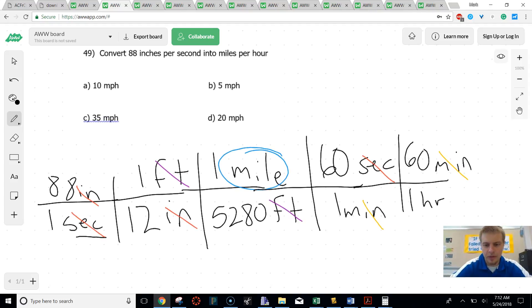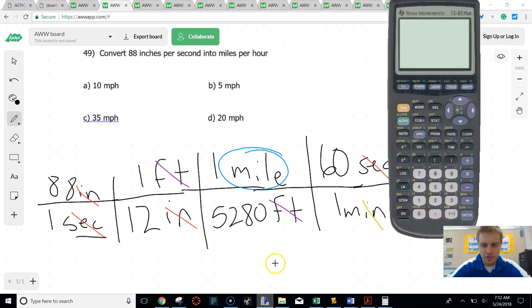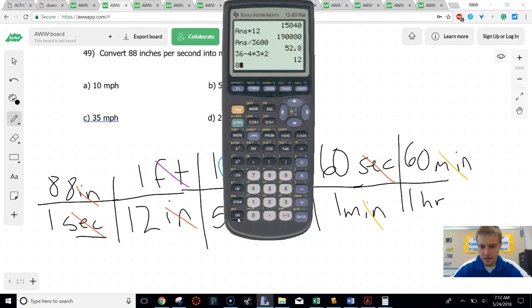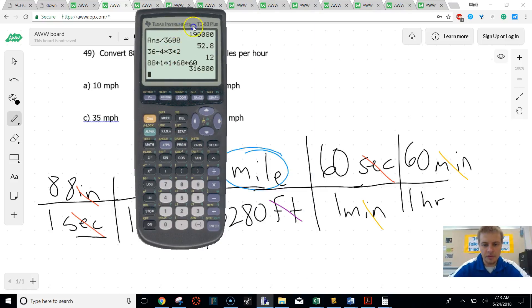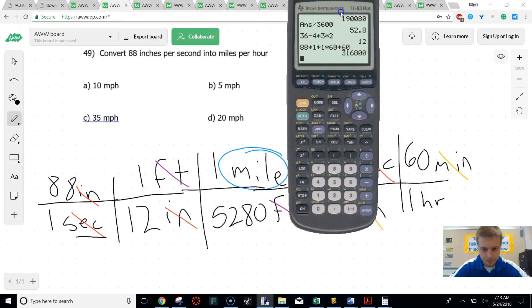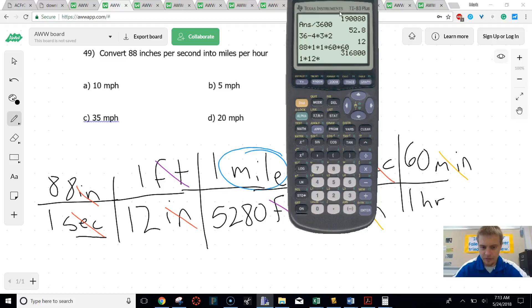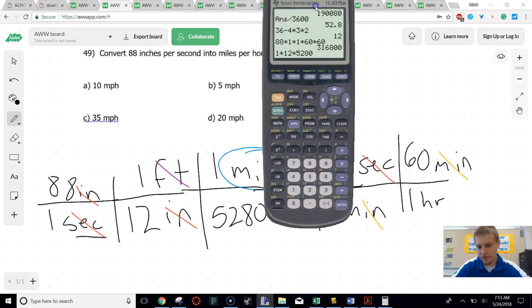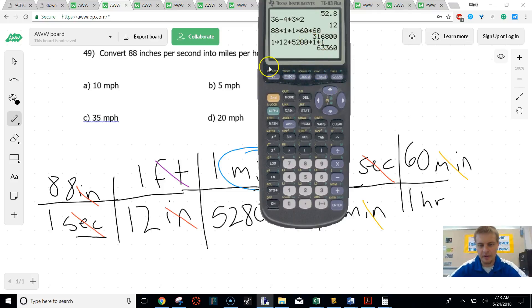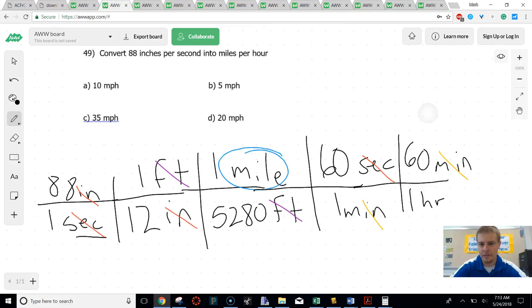And then we just go through and we multiply our fractions. So first I'm going to multiply the top, which would be 88 times 1 times 1 times 60 times 60. And that's going to give me that big number. And then I'm going to multiply out my bottom, which would be 1 times 12 times 5,280. And I guess I could do times 1 and 1, but that really doesn't matter. And then I get that number there. And then, since we have those numbers on top of each other, we're going to divide them. So that would be 316,800 divide by 63,360. And that is going to give me 5. So we're going 5 miles per hour.